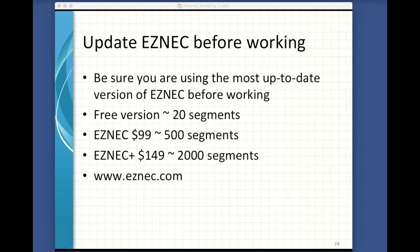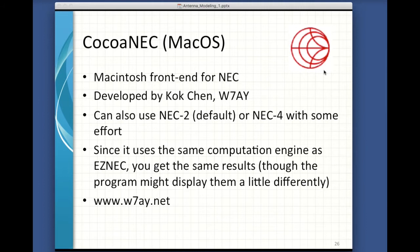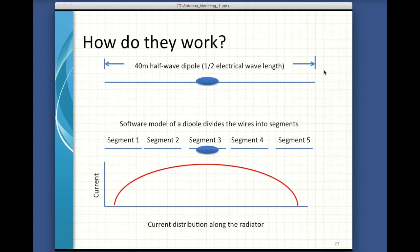By the way, if you want a copy of EZNEC, if you own the antenna book it's on the CD in the back, and there are also a couple of chapters on antenna modeling in the book. CocoaNEC is an antenna analyzer program for the Macintosh, developed by a fellow named Coke Chen. He's developed a lot of really cool software for the Mac. It also uses NEC2 — it can also use NEC4 with some effort. It uses the same computation engine as EZNEC. You get the same results, though the program might display them a little differently.